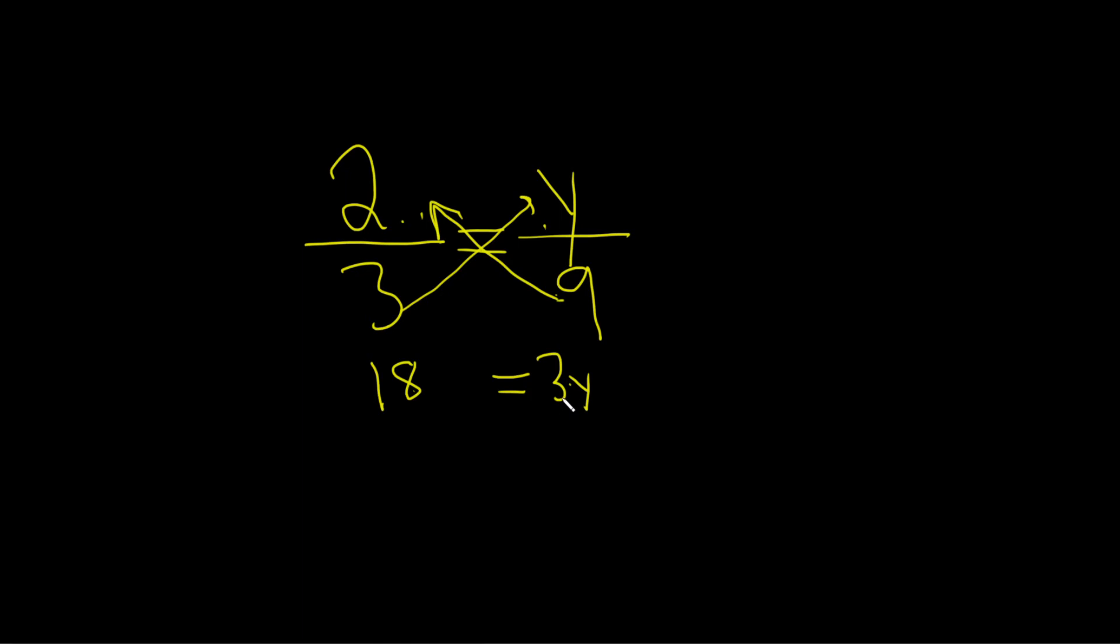So to get rid of the 3 here, because it's being multiplied by y, we have to divide it away. So you draw a line,